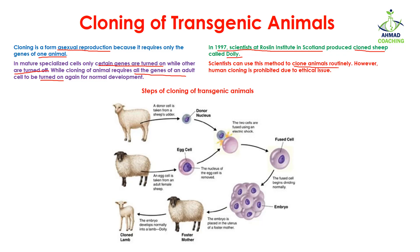However, human cloning is still prohibited because of ethical issues. Now, what are the steps of the cloning of a transgenic animal? For example, we are cloning a sheep — you are going to take the donor cells from the sheep.